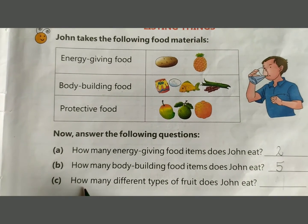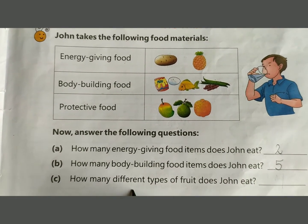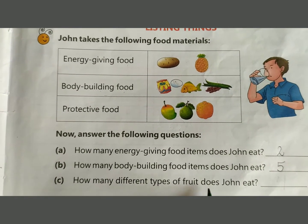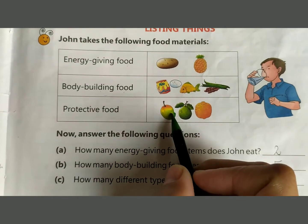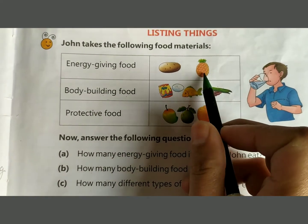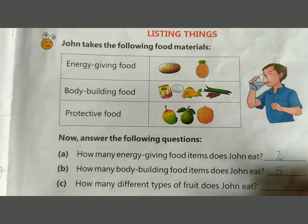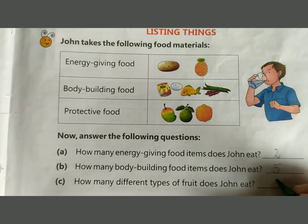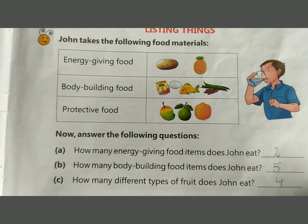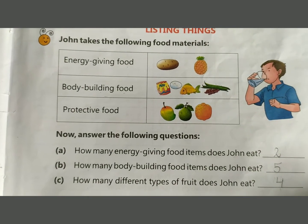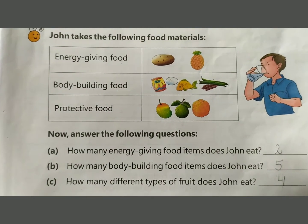Next: how many different types of fruit does John eat? Count: 1, 2, 3, 4. Four types of fruits does John eat.